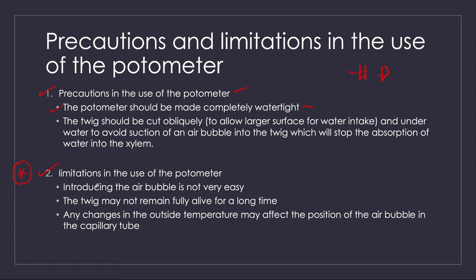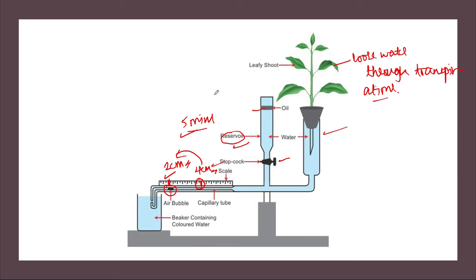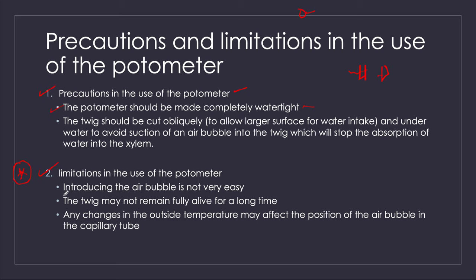The limitations are: first, introducing the air bubble is not easy — it's very difficult to introduce only one air bubble. If you introduce two, the whole experiment is ruined. Second, the twig may not remain fully alive for a long time since the roots have been removed. Third, any changes in outside temperature may affect the position of the air bubble in the capillary tube, so temperature must remain constant during the experiment.